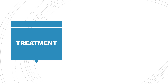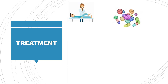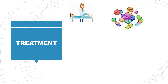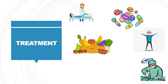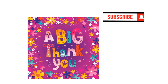Treatment for lordosis includes: physiotherapy to correct posture and maintain correct spine alignment; medications to treat the abnormality; correct nutritional supplements including Vitamin D; exercises for correct posture and relaxation; corrective surgeries; and reduction of excess weight.